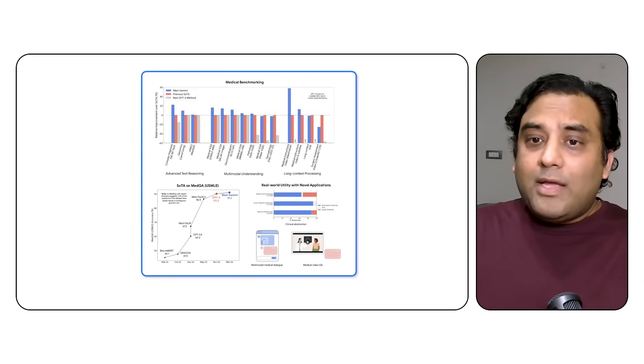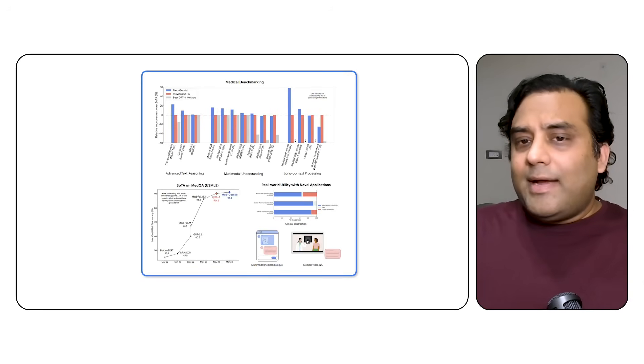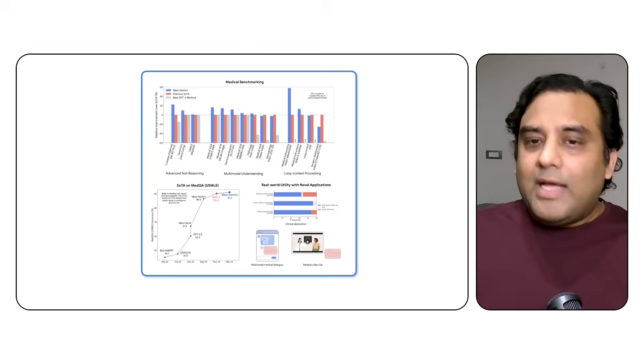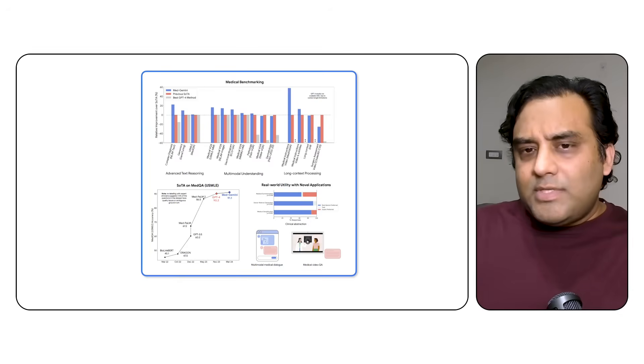Multimodal RAG has broader scope since ideally it should be able to reason through all modalities, but in this problem statement we are restricting ourselves to only text and image. We have the foundation of our problem statement clear. Now let's talk about the solution — we'll do it in two steps: first, a visual overview of what needs to be done, and second, a code walkthrough of the built solution. Let's understand visually what needs to be done to address multimodal — text and image — RAG.